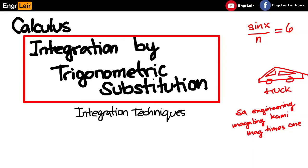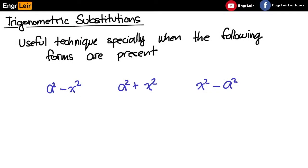Another integration technique is what we call trigonometric substitutions. Trigonometric substitution is a technique that is useful when the following expressions or forms are present.